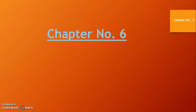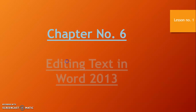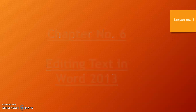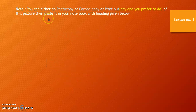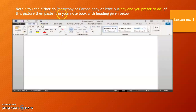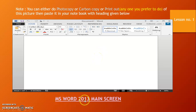Students, you have to clearly listen and watch the video. After that, open your notebook and make a title page for chapter number 6, editing text in Word 2013. Read the note carefully. You can do a photocopy, carbon copy, or print out of the picture of the MS Word 2013 main screen, then paste it in your notebook with the heading 'MS Word 2013 Main Screen'.